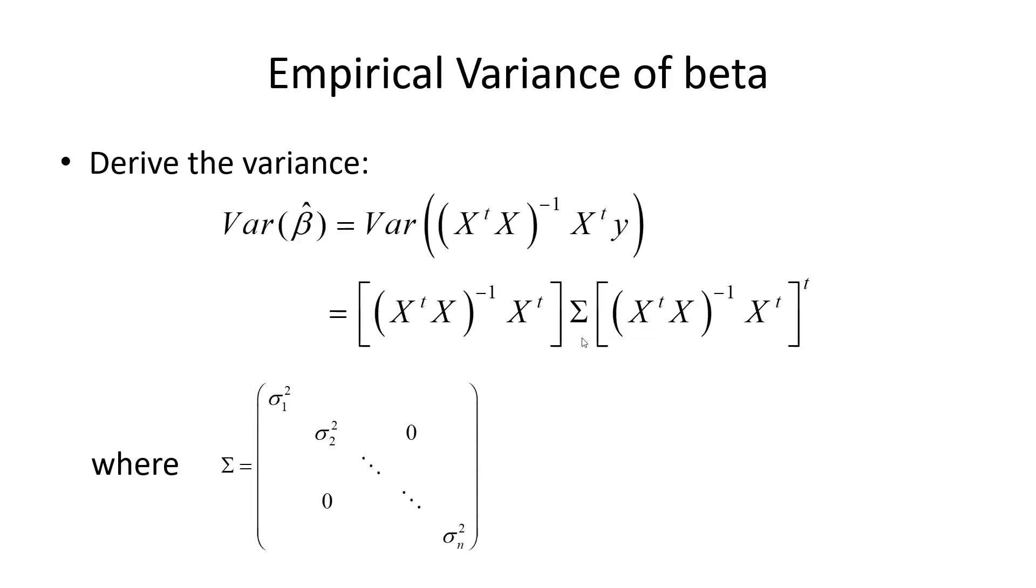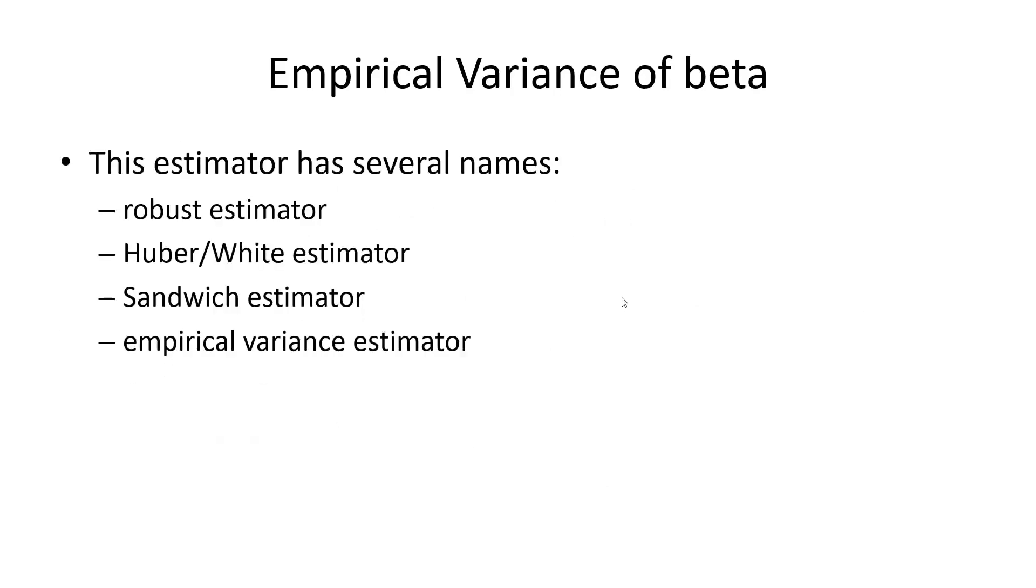I call this the North American sandwich because in Germany, we only have meat and bread, right? So what you might call the open face sandwich. So when you explain this to a German, why this is a sandwich estimator is completely unintuitive. So it's the North American sandwich. So sandwich estimator or it's called the empirical variance estimator. So it's one of those four names.